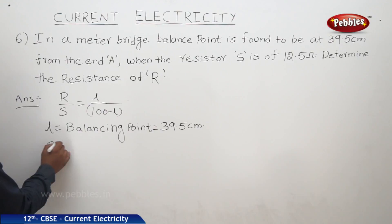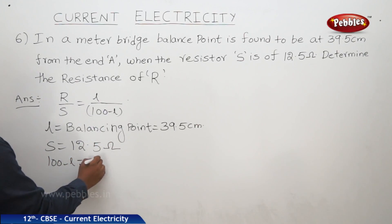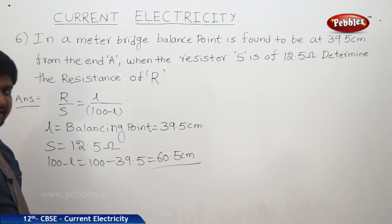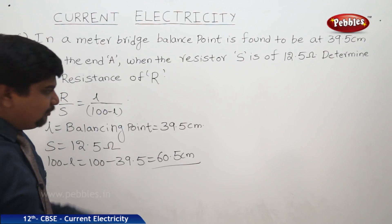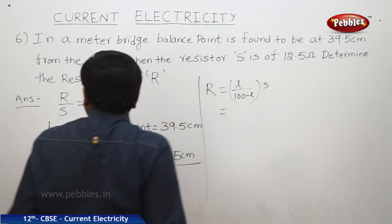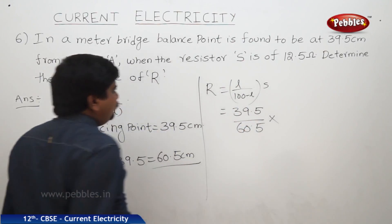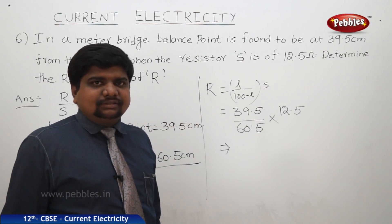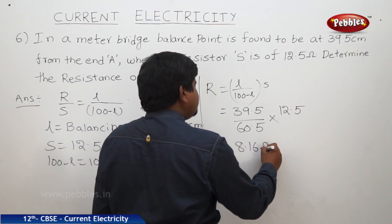S is the known resistor equal to 12.5 ohms, and 100 minus L equals 100 minus 39.5, which is 60.5 centimeters. The meter bridge formula is R divided by S equals L divided by (100 minus L). Therefore R equals (L divided by 100 minus L) times S, which gives (39.5 divided by 60.5) times 12.5, and R equals 8.16 ohms.